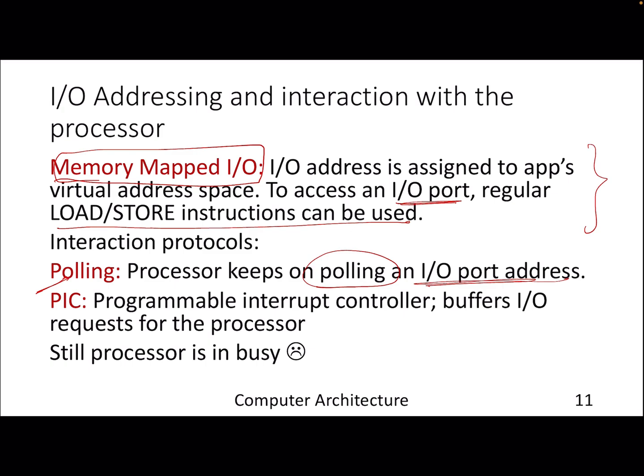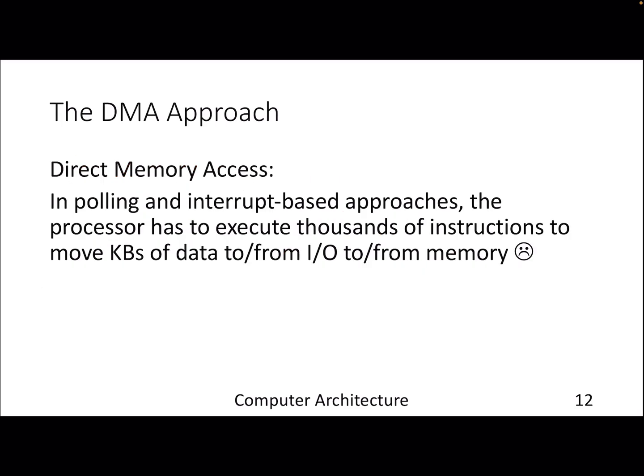Another way of handling IO is through a programmable interrupt controller — circuitry that buffers all IO requests for the processor. Instead of the processor asking every time, it buffers incoming IO requests and the processor handles them as needed. However, the processor is still busy while handling the IO. For loading a movie from your hard disk — we're talking gigabytes — transferring that will take so much processor time, making it busy regardless of the mechanism.